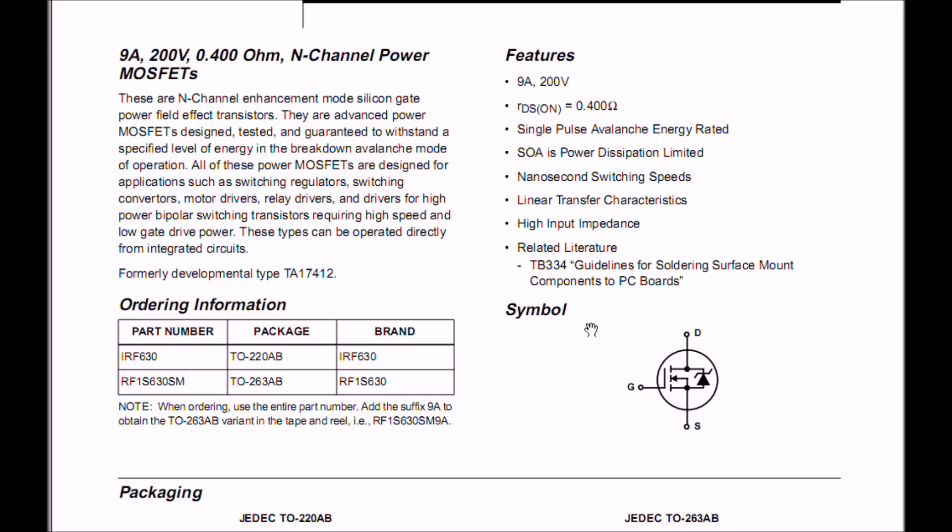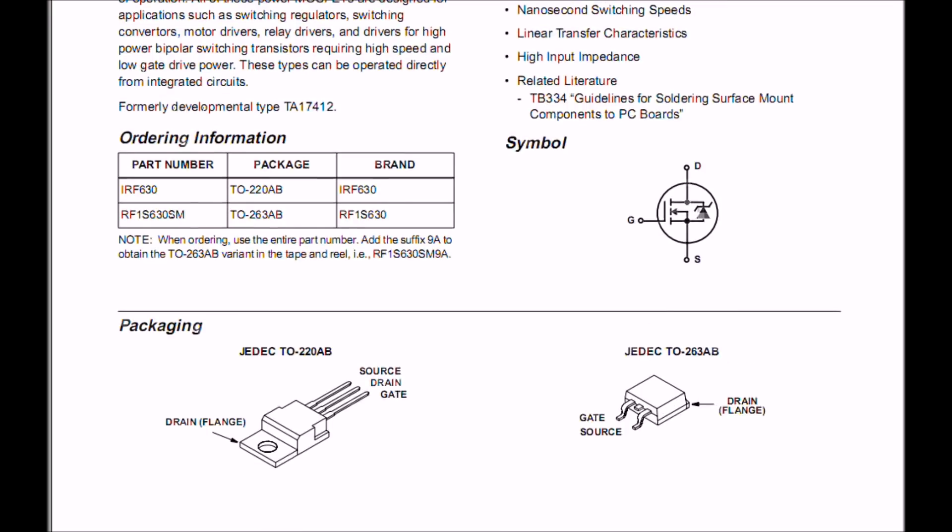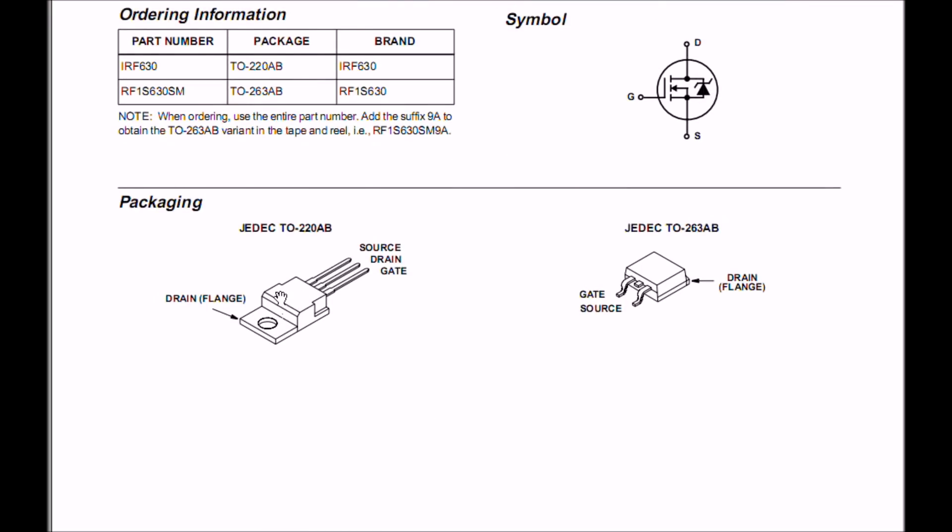The next issue is electrical characteristics. The 630 is 9 amps at 200 volts. It has, when it's turned all the way on, 0.4 ohms resistance. Let's move down the page a bit. It comes in a TO220 case. In fact, both of these MOSFETs do, and the connections are the same: the gate, drain, and source. The flange out here is connected to the drain.